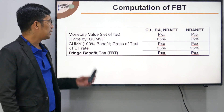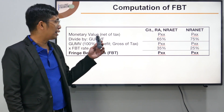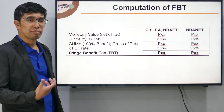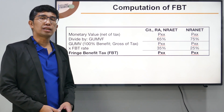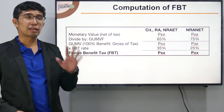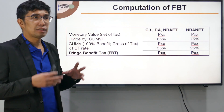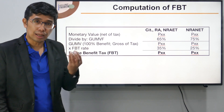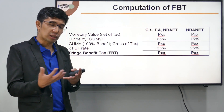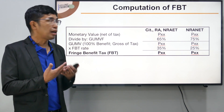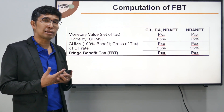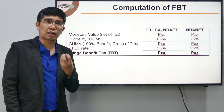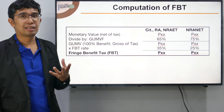So let's proceed to the formula in computing fringe benefit tax. We start with what is called the monetary value — that is the actual value of the benefit that you receive. In our earlier illustration, for example, Enrico Tabag is an executive of a private firm who received a fringe benefit in cash amounting to $65,000. That amount is the monetary value, and it is considered net of tax because fringe benefit tax is a final tax — meaning the $65,000 I received already has the tax deducted from it.